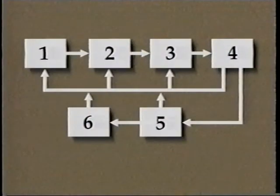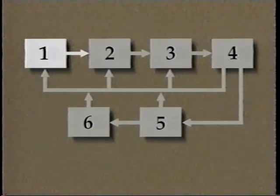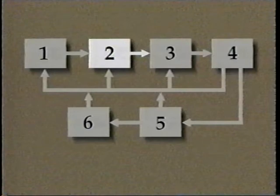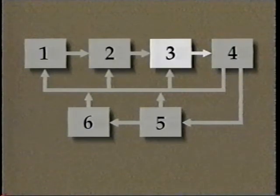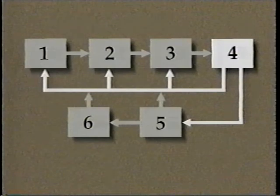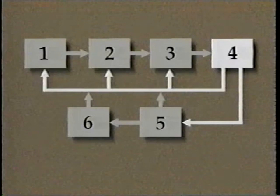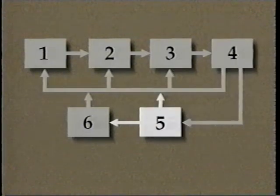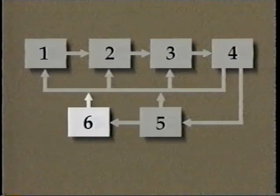The system has six phases. Phase one: identify safety problems. Phase two: identify alternative improvements. Phase three: evaluate alternatives and select improvements. Phase four: develop and implement the highway safety improvement program. Phase five: evaluate each safety improvement. And phase six: evaluate overall safety program.